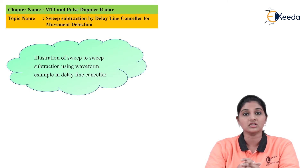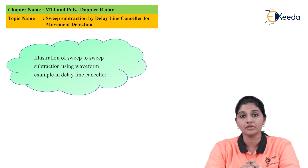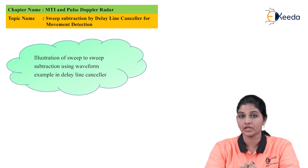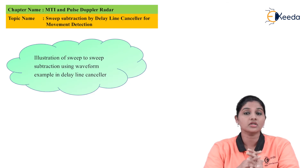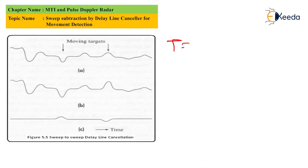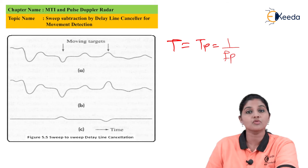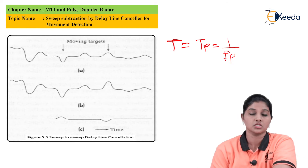The delay line canceller performs the function of subtraction of sweep. If we consider the time period as T, which is obtained from the output of the MTI radar, the output of the MTI radar is stored into the memory. The time period T is given as T equals Tp, which equals 1 divided by fp — that is, the reciprocal of the frequency.